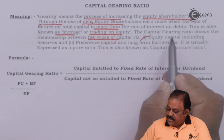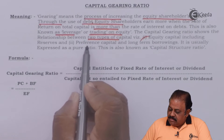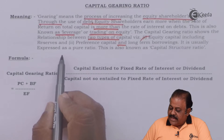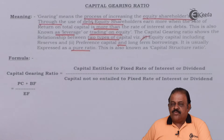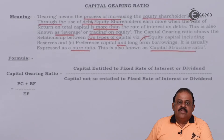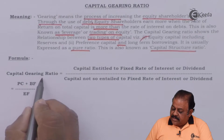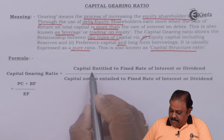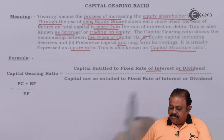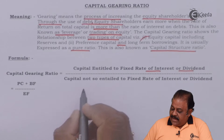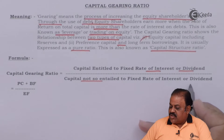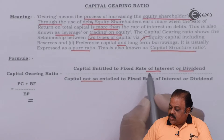The capital gearing ratio shows the relationship between two types of capital: equity capital including reserves, preference share capital, and long-term borrowings. It is usually expressed as a pure ratio and is also known as the capital structure ratio. The formula is: Capital Gearing Ratio = Capital entitled to fixed rate of interest or dividend divided by capital not entitled to fixed rate of interest or dividend.